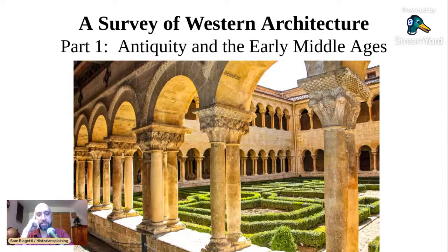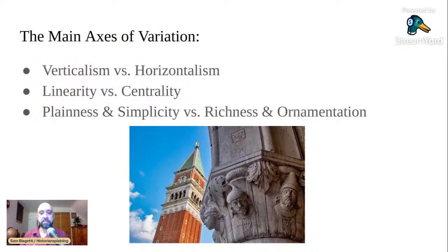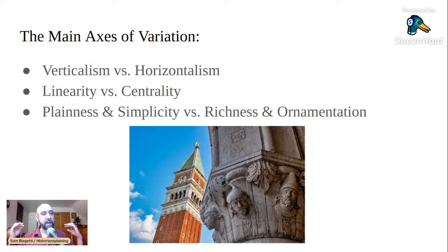I want to talk about the long stream and evolution of Western architecture, and I'm going to first put forward a set of themes, or what I call axes of variation, that you can see different styles and designs shifting among. The first one is the variation between verticalism and horizontalism — does the line and direction of your building point upward towards the sky, or does it reach outward across the earth? Then linearity versus roundness — does your building have a forward-looking direction, or does it face inward towards the focal point? And finally, plainness and simplicity versus richness and ornamentation.